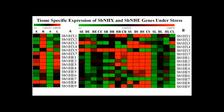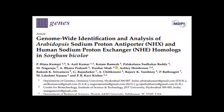We imposed four stresses: salt (150 mM NaCl), drought (200 mM mannitol), cold (4°C), and heat (42°C) for two hours. We collected samples — embryo, root, leaf, and stem — isolated RNA, and performed qRT-PCR. Most sodium-proton antiporters and exchangers are highly expressed under salt stress, followed by heat and cold in stem. Without stress, high expression of sodium-proton antiporters and exchangers was observed in root tissue, followed by leaf tissue. This work was published as a genome-wide analysis of sodium-proton antiporters and exchangers in Sorghum bicolor in the journal Genes.